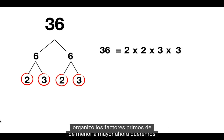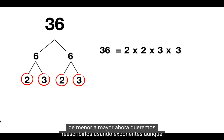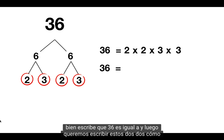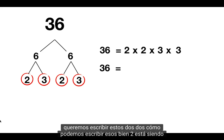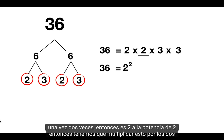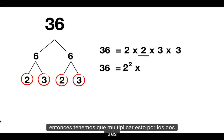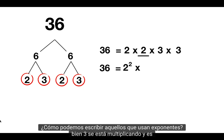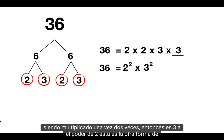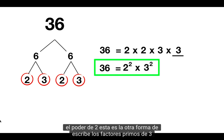We write that 36 is equal to 2 times 2 times 3 times 3. We've organized the prime factors from smallest to biggest. Now we want to rewrite them using exponents. So we'll write that 36 is equal to these two 2s — well, 2 is being multiplied once, twice — so it's 2 to the power of 2. Then we multiply by the two 3s: 3 is being multiplied once, twice — so it's 3 to the power of 2. This is the other way to write the prime factors of 36.